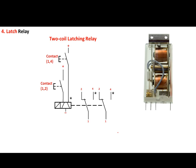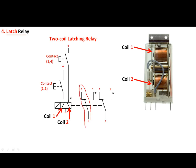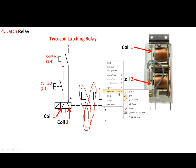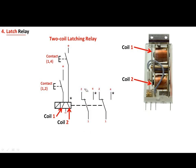The fourth signal storage method is the latch relay. A latch relay is an interesting component with dual coils — coil one and coil two. When a push button is connected to the first coil and a second push button to the second coil, this causes the relay to have two states depending on which push button is operated.